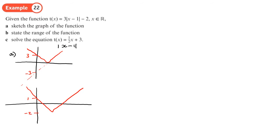The bottom part of the V is going to be below the axis at negative 2. We need the points where it crosses the axis and the vertex at the bottom. The vertex would be at x = 1, because if you make the expression equal to 0, it's got to be x = 1 for it to work. So this point down here is at (1, -2).